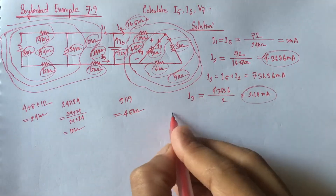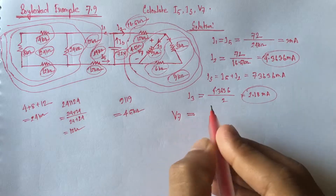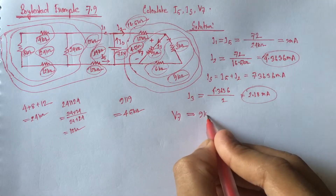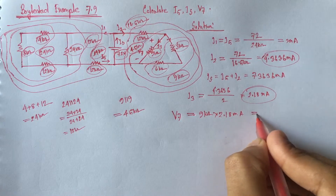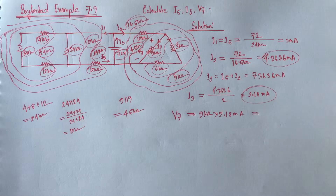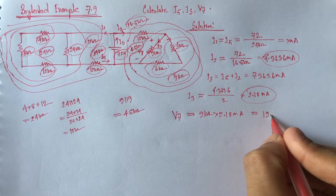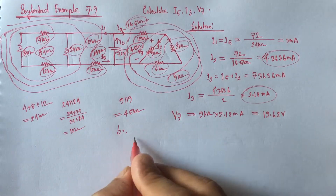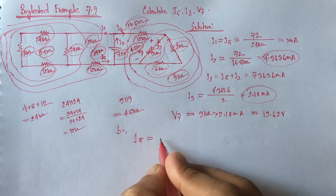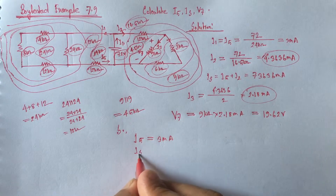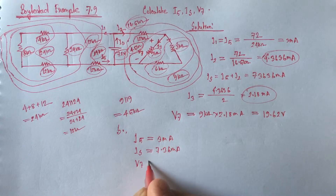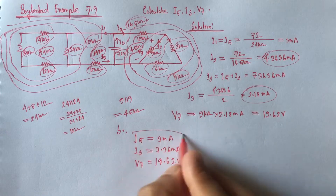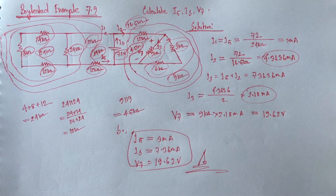Now the voltage V7 equals the 9 Kiloohm resistance multiplied by the current 2.18 mA. So this is 19.62 volt. Therefore, I5 equals 3 mA, IS equals 7.36 mA, and V7 equals 19.62 volt. These are the answers. Thanks for watching.